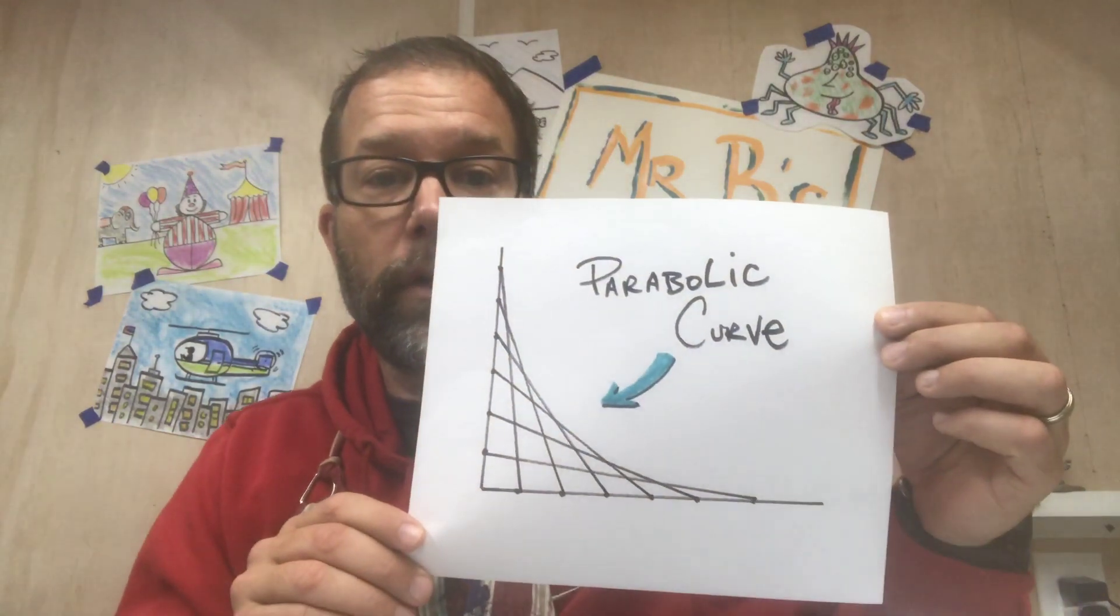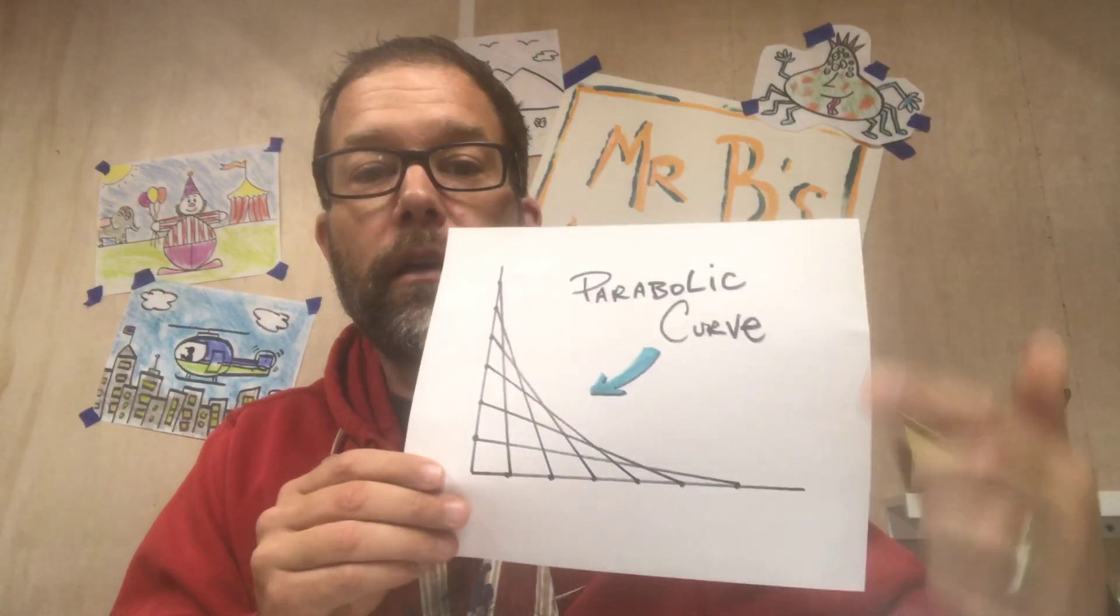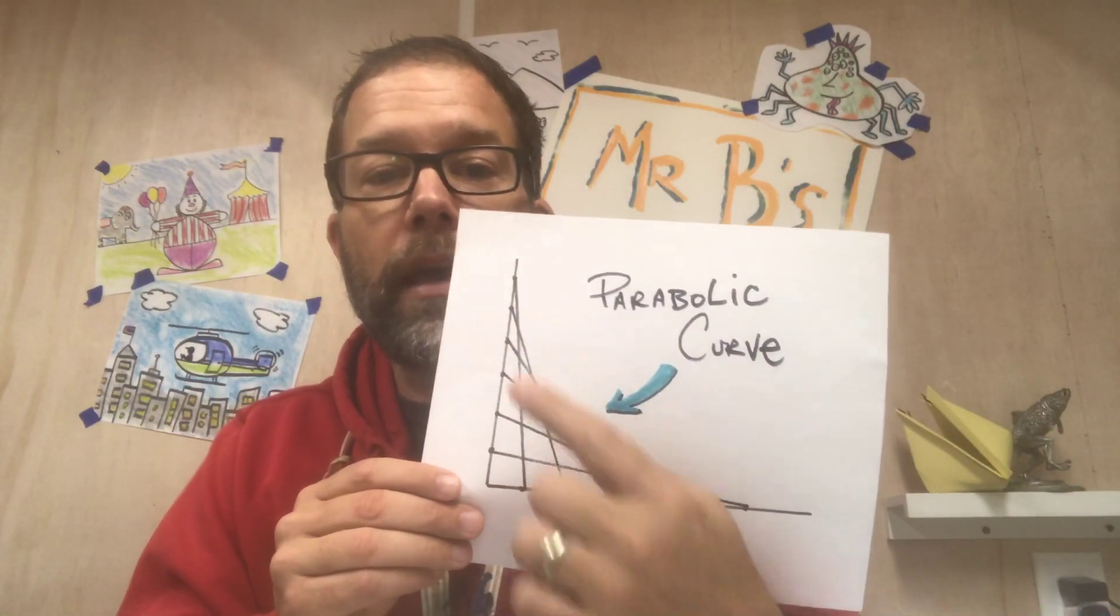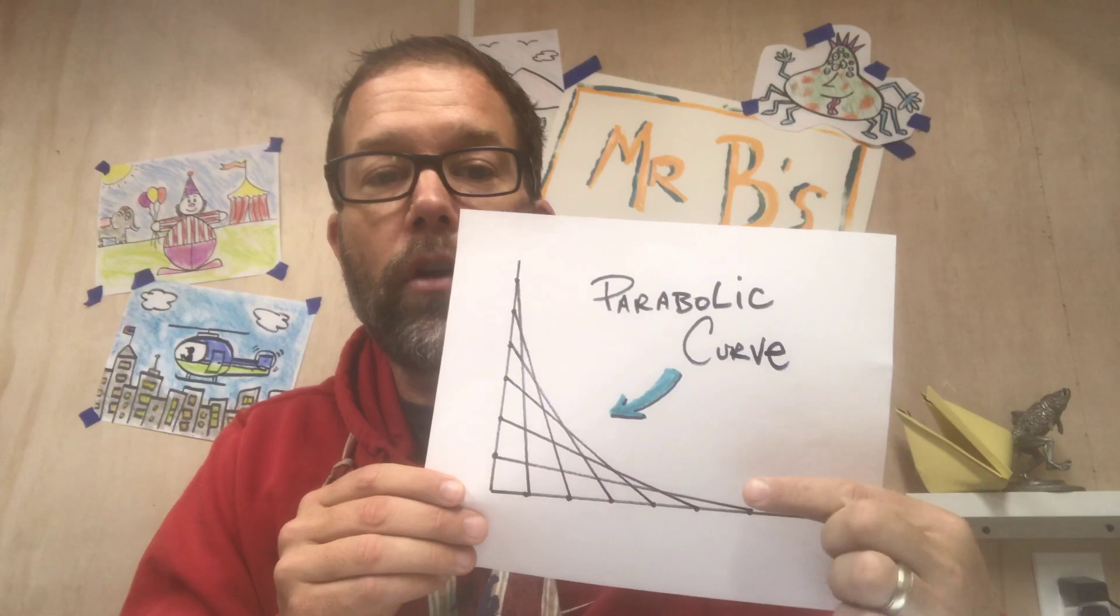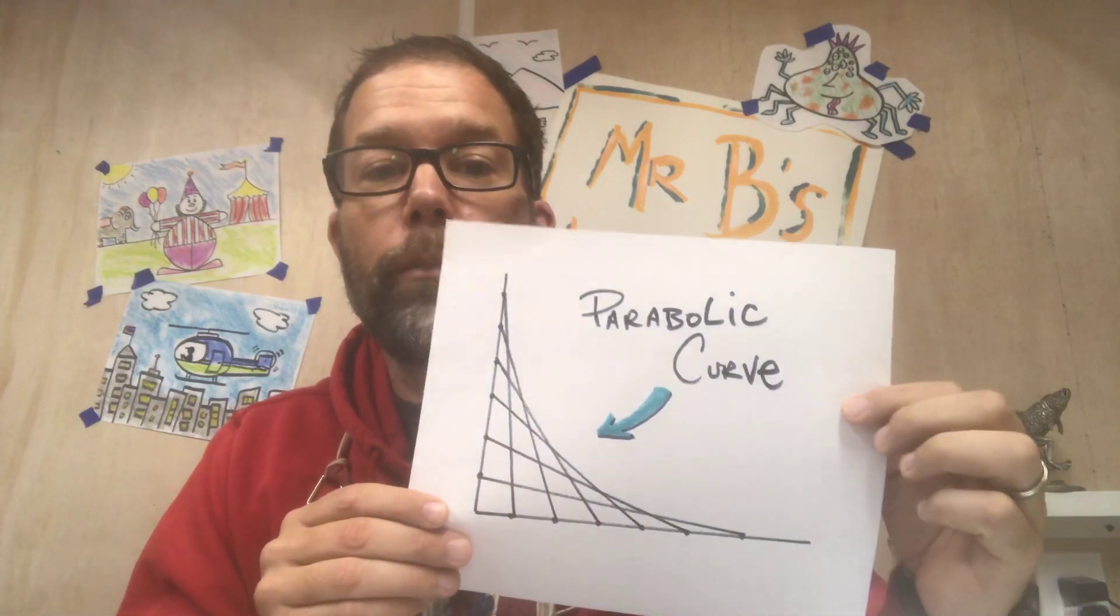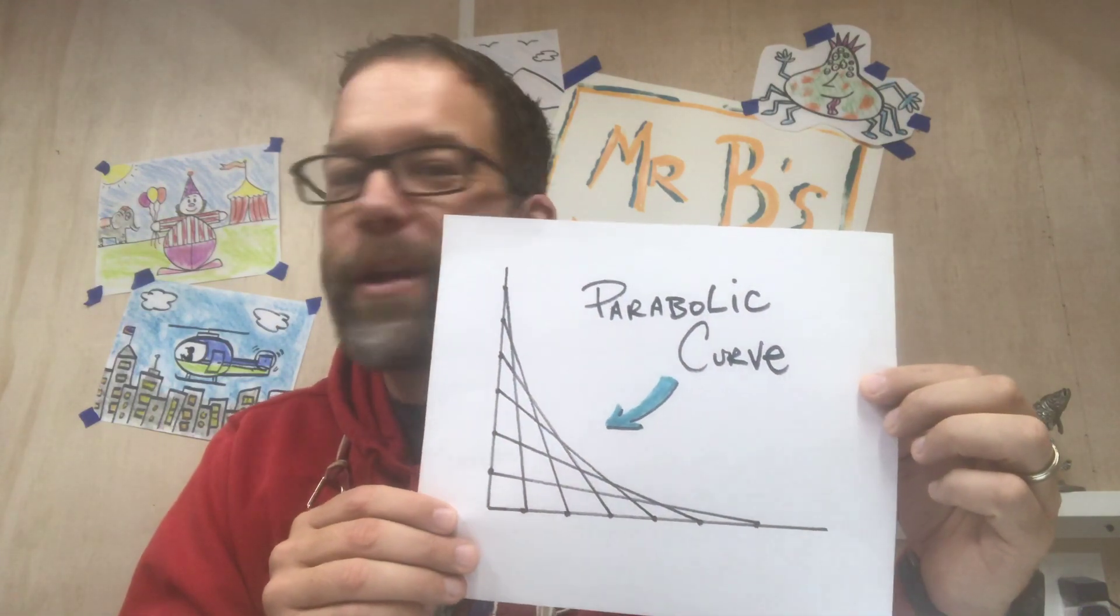A parabolic curve is a curve made up of straight lines. I've drawn one for you and this is what it looks like. You can see there are a bunch of straight lines put together and it creates this nice curve right here. That's called a parabolic curve.